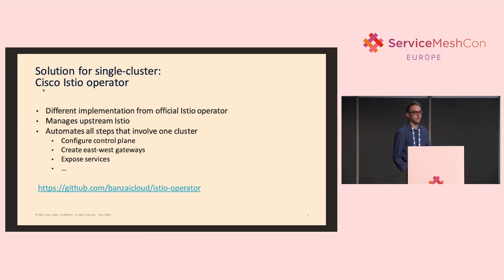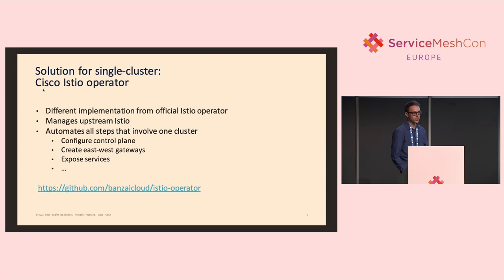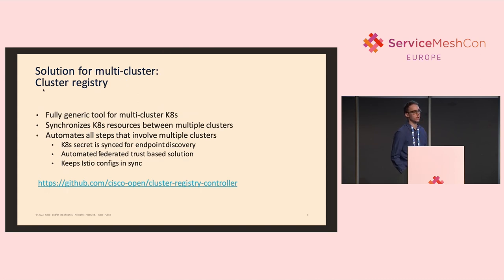I'll highlight that this is not the official Istio operator most of you are probably familiar with — this is a completely different implementation. It was actually implemented and open-sourced before the official one, back at Banzai Cloud, and is now referred to as the Cisco Istio operator. What this operator does is automate all those single-cluster steps: it installs the Istio control plane, installs the east-west gateways, configures those, et cetera. The second part — involving multiple clusters — is more challenging to solve. We searched for the right tools, couldn't find one, so we ended up implementing our own solution, called cluster registry.